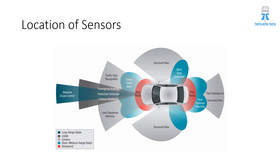Park assistant is marked in ash color — that is the camera. Rear collision warning is marked in green, which is short or medium range radar. Park assist is marked in red, which is the ultrasonic sensor.